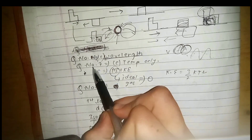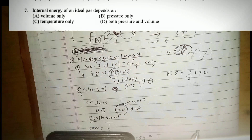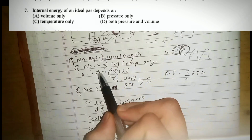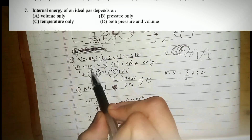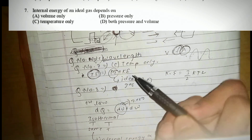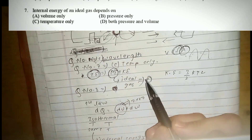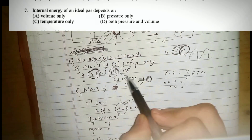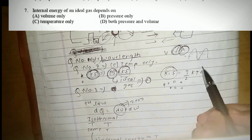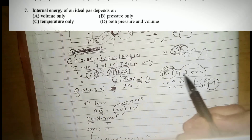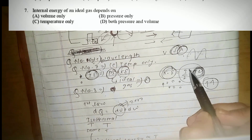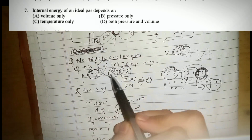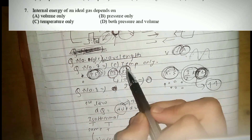Question number seven: the internal energy of an ideal gas depends on what? For an ideal gas, total energy is potential energy plus kinetic energy. Potential energy is zero, so all energy is kinetic energy. Kinetic energy equals 3/2 kT, so internal energy is directly proportional to temperature only.